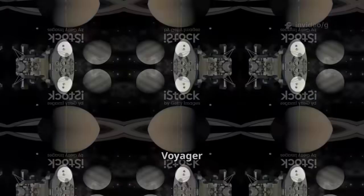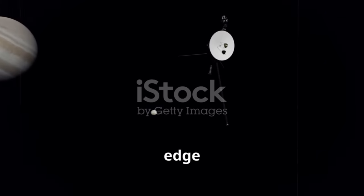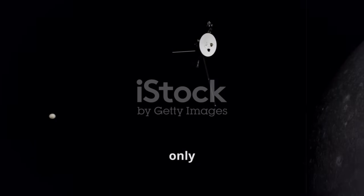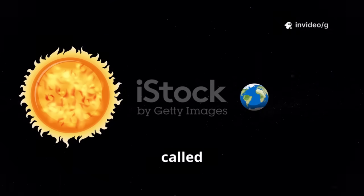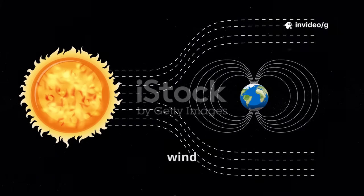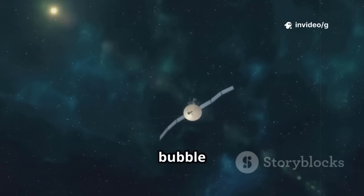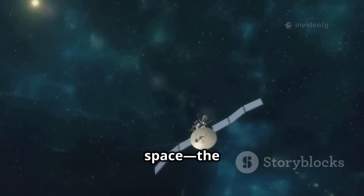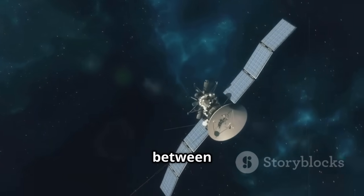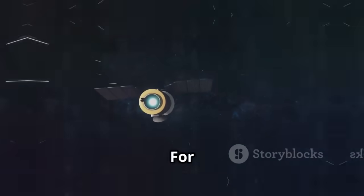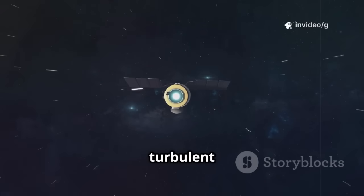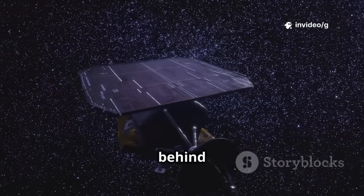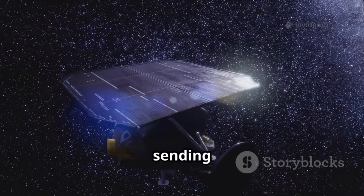Leaving Saturn behind, Voyager 1 began its trek toward the edge of our solar system, a boundary only theorized until then. The sun's influence creates a giant bubble called the heliosphere, filled with solar wind and magnetic fields. Beyond this bubble lies interstellar space, the vast unknown between the stars. For decades, Voyager 1 sailed through the heliosheath, the turbulent outer layer of the heliosphere. The sun shrank to a bright star behind it, and the spacecraft kept sending back data.